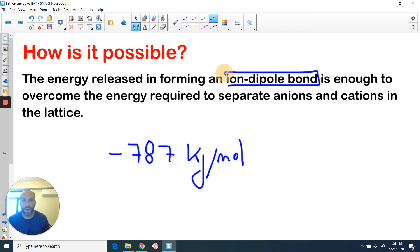Because we've got ions and the polar parts of the water molecule bonding with each other. This amount of energy must be enough to overcome this energy here, and that will allow those ions to separate.